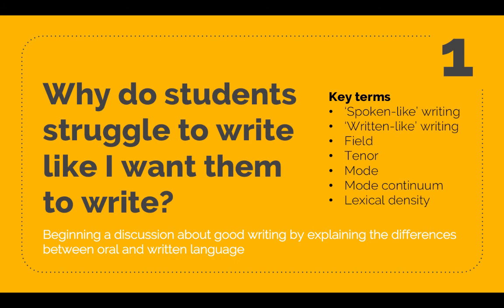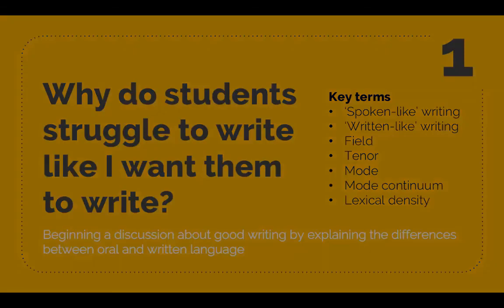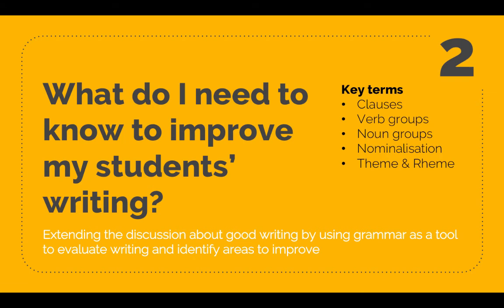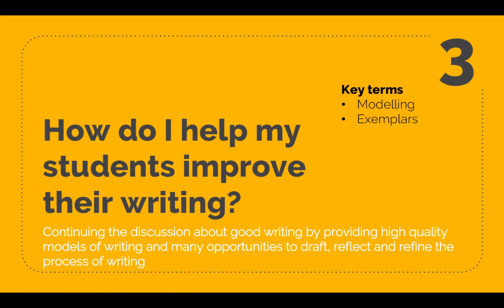The three topics that will frame the three lectures and seminars are: one, why do students struggle to write the way I want them to write — we'll unpack why that is; two, what do I need to know to improve my students' writing — I'll focus on the real basics of English grammar to help move them along; and three, how do I help my students improve their writing — we'll focus on a general scope and sequence plan, or the teaching and learning cycle, to help you develop units that develop writing and help students achieve Stage 6 HSC Band 5 and Band 6 answers.